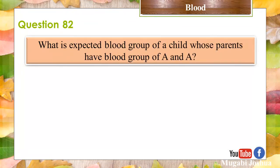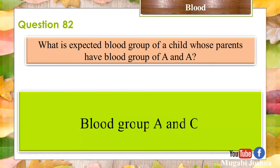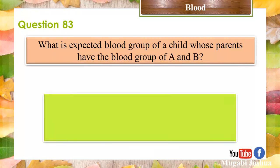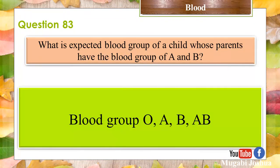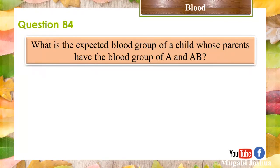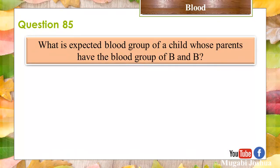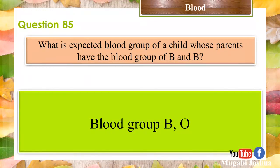Question 83: What is the expected blood group of a child whose parents both have blood group A? Blood group O and A. Question 84: What is the expected blood group of a child whose parents have blood group A and AB? Blood group A and AB. Question 85: What is the expected blood group of a child whose parents both have blood group B? Blood group B and O.